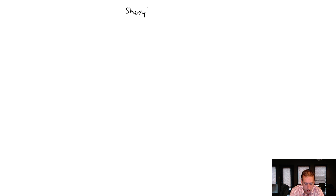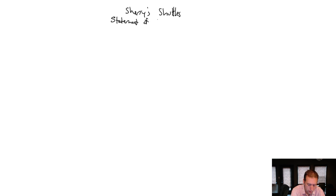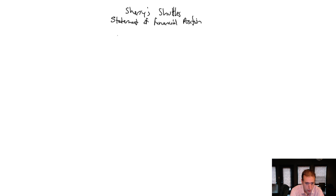So we've got the name of our company — Sherry's Shuttles — and the name of the financial statement. I've been calling it a balance sheet casually, but the formal name is the statement of financial position. If you called it a balance sheet in my class, I would not have a problem with that, but different strokes for different profs. For the date, balance sheets we just date — not 'for the year ended.' Some profs might want you to say 'as at' or 'as of,' but just dating is absolutely acceptable. So I'm going to date it December 31st, 2017.